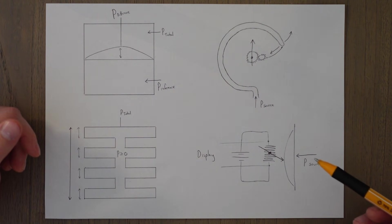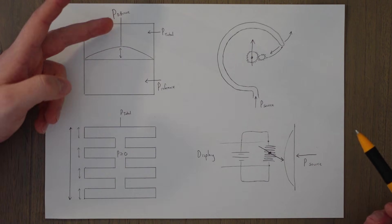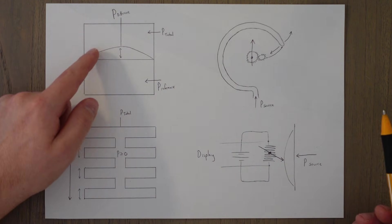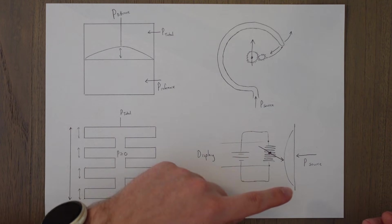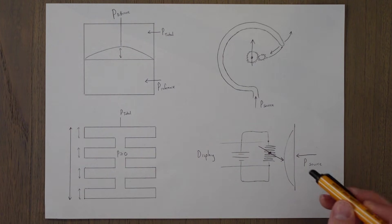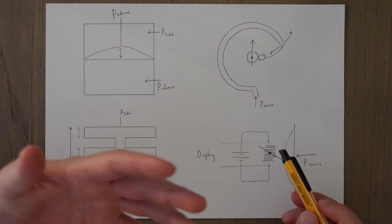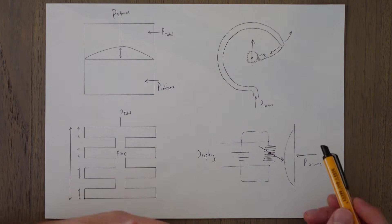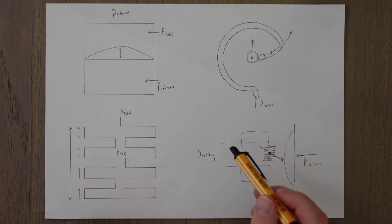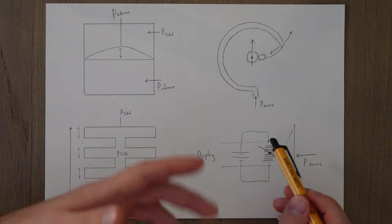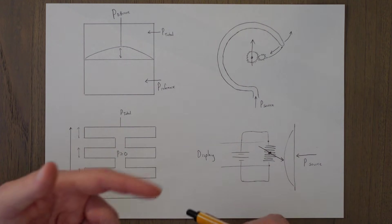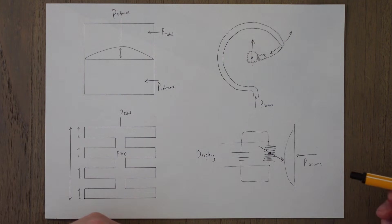You also get pressure transducers, essentially electronic diaphragms. The diaphragm deflects, the metal diaphragm here deflects, and that metal diaphragm pushes on a resistive element, and the resistive element changes its resistance according to how much pressure is put on it. We measure the voltage across the resistor, and by measuring that voltage, we can then convert that into a display, which shows how much pressure is being put on the diaphragm.